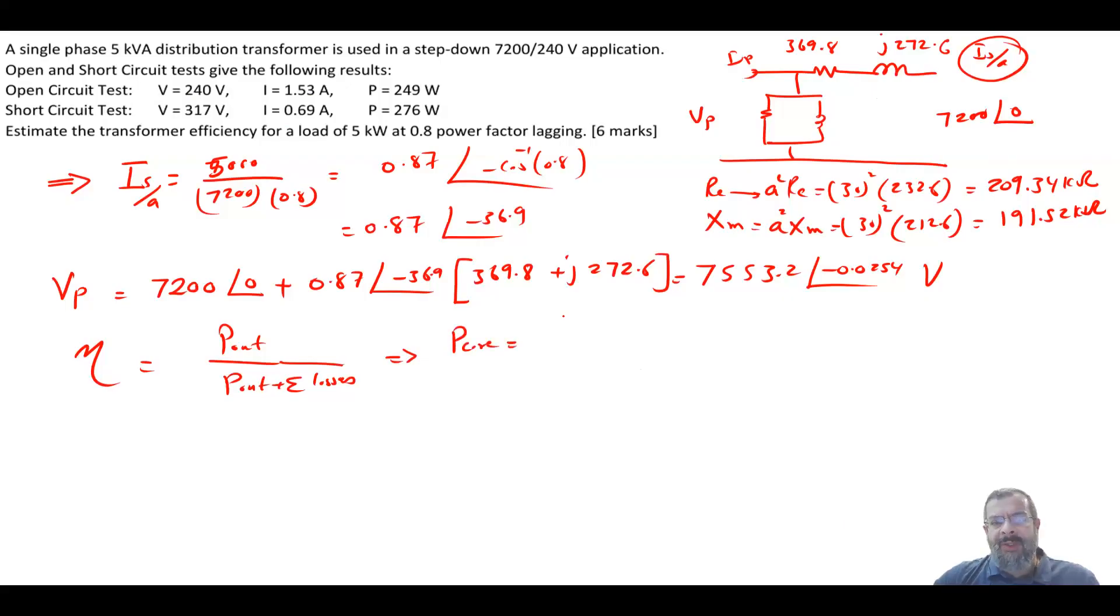So we have the core loss, which is equal to Vp square divided by RC, so it's equal to 7553.2 square divided by RC, which is 209.34 times 10^3, and this will give me 272.5 watts. And P copper is equal to I square times R equivalent, which is 0.87 square times the 369.8 ohm, and this will give me 279.9 watts.